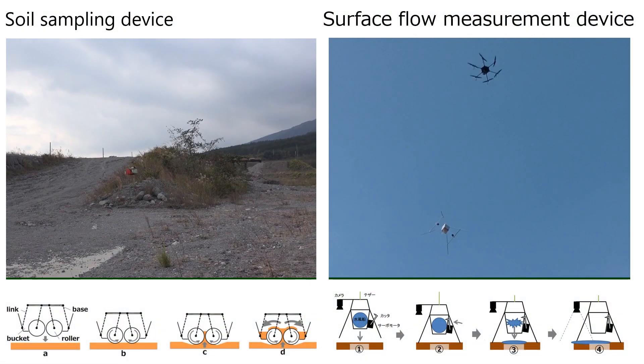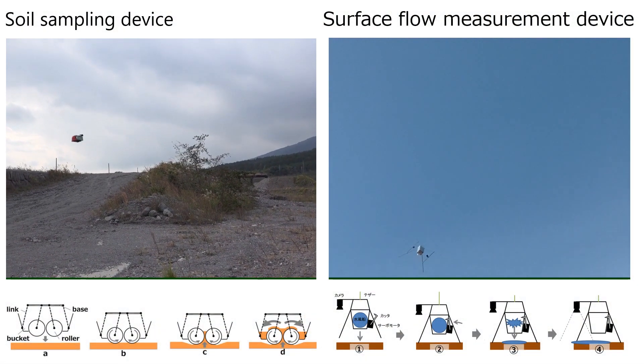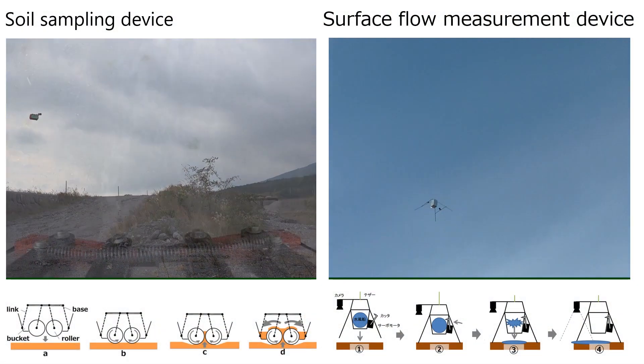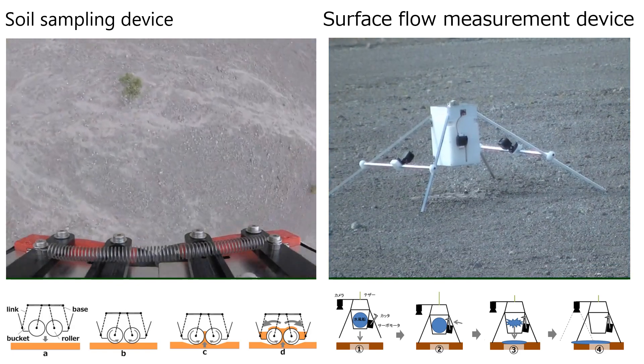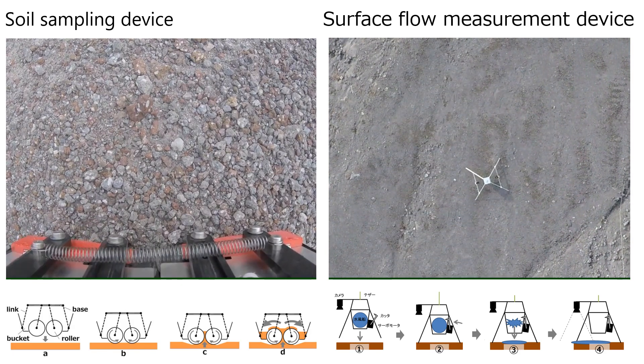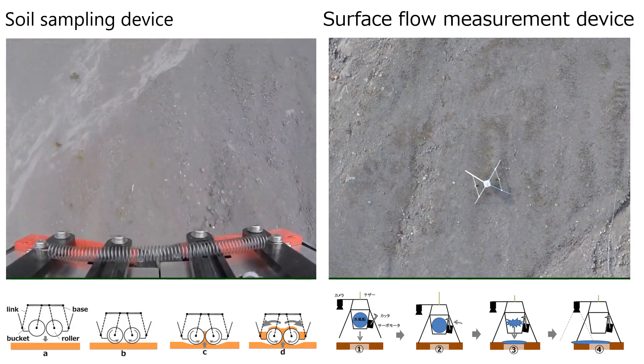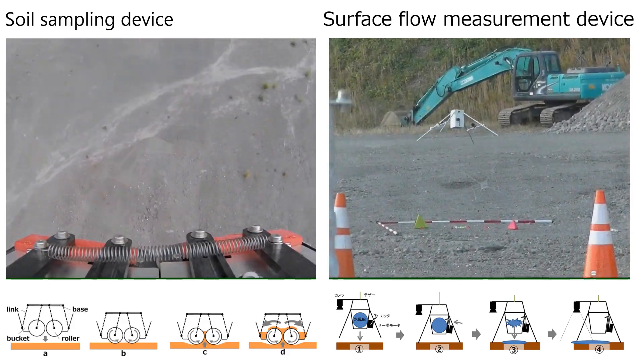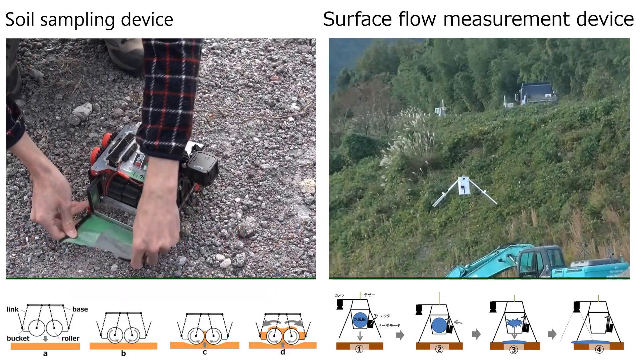To obtain ash properties, two devices hung by a flying robot were developed. The left device is for soil sampling, and the right is to measure surface flow.